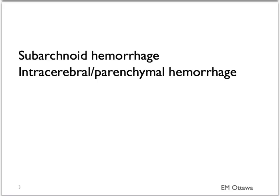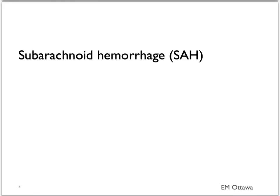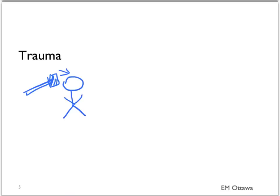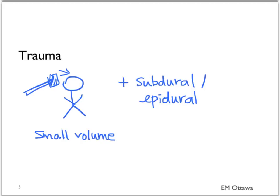We will discuss the presentation of subarachnoid hemorrhage and intracerebral or parenchymal hemorrhage. First, subarachnoid hemorrhage. It can be separated into traumatic and non-traumatic causes. Traumatic subarachnoid hemorrhage tends to occur with trauma and in combination with other traumatic bleeds. Traumatic subarachnoid bleed by itself tends to be of small volume, so besides a headache and maybe nausea and vomiting, the patient does not usually present with focal neurological signs.